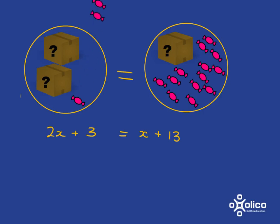So the first thing I'm going to do is I'm going to take the sweets out of here. But if I take three sweets out of here, of course to keep it balanced, I must take three sweets out of there.